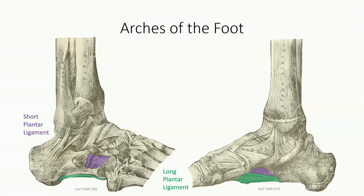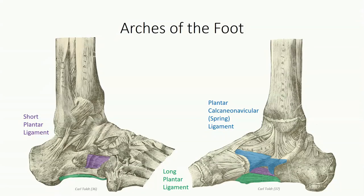Finally, we have the plantar calcaneal navicular, or spring ligament, which runs from the sustentaculum tali of the calcaneus to the tuberosity of the navicular bone. Just superior to this ligament is the apex of the arch, formed by the head of the talus. You can think of the spring ligament as a hammock lying between two trees, with the head of the talus as an individual resting in that hammock. That's going to do it for today's session and for our journey through the lower limb. This brings us to the third and final unit of the course where we will consider the internal organs.